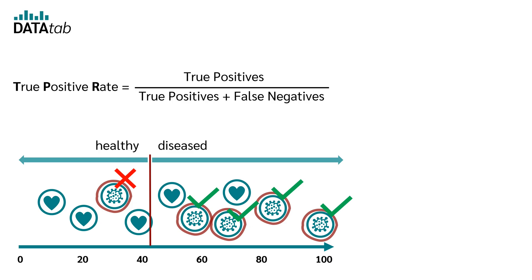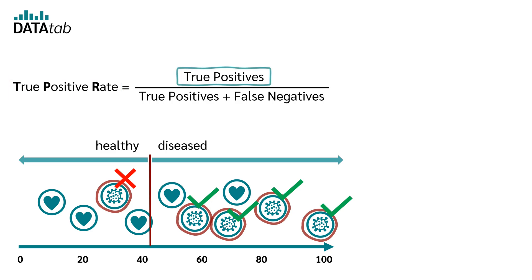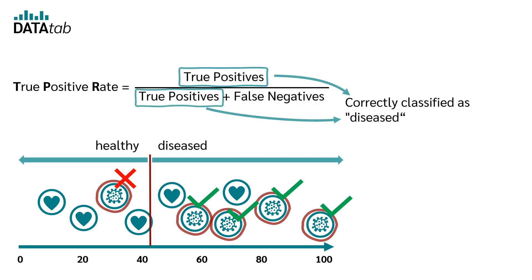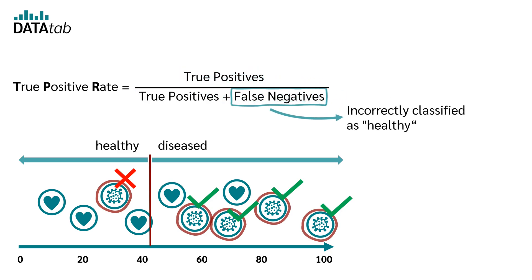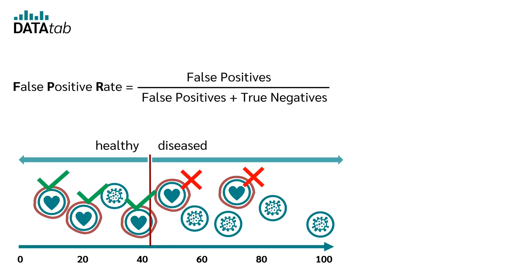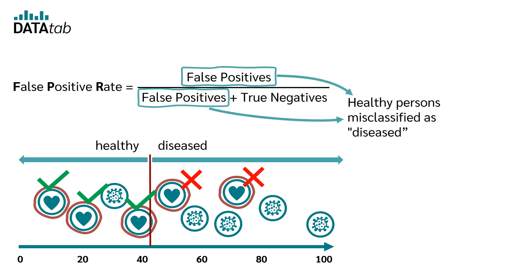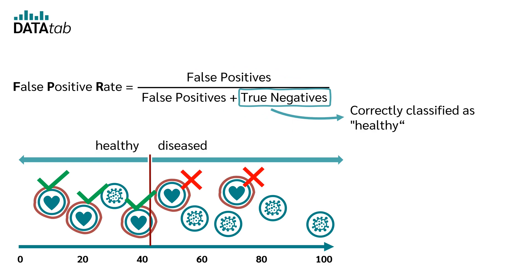The true positive rate is calculated with this equation: the true positive rate equals the true positives divided by the true positives plus the false negatives. The true positives are the people correctly classified as diseased and the false negatives are the people incorrectly classified as healthy. The false positive rate is obtained with this equation: the false positive rate equals the false positives divided by the false positives plus the true negatives. The false positives are the healthy individuals misclassified as diseased and the true negatives are the individuals correctly classified as healthy.